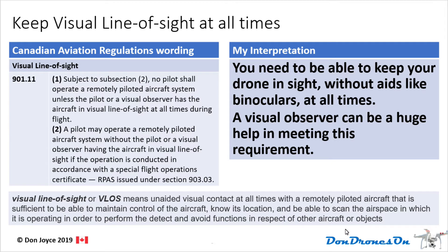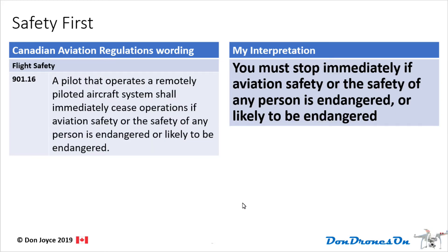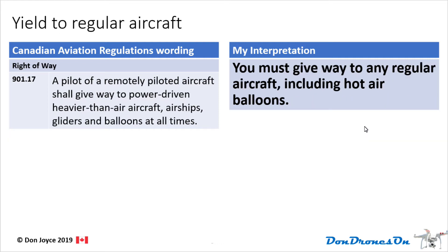This is also very important. Rule 901.16, flight safety, emphasizes that you must stop immediately if aviation safety or the safety of any person is endangered or likely to be endangered. Rule 901.17 is a sensible one — yielding to regular aircraft. You must give way to any regular aircraft including hot air balloons. The pilot of a remotely piloted aircraft shall give way to power-driven heavier-than-air aircraft, airships, gliders, and balloons at all times.